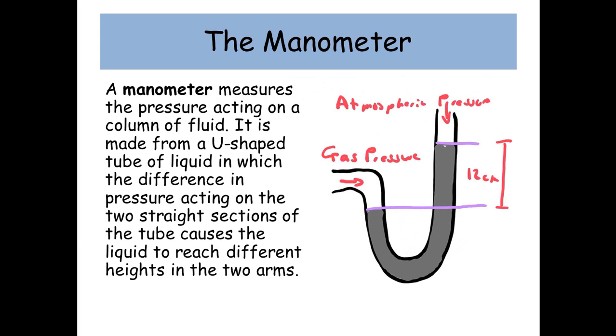Another device we need to be aware of is called the manometer. A manometer measures the pressure acting on a column of fluid. It is made from a U-shaped tube of liquid in which the difference in pressure acting on the two straight sections of the tube causes the liquid to reach different heights in the two arms.